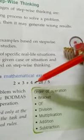For example, solving a mathematical expression: 2 into 3 plus 4 into 20 by 5. To solve this mathematical expression, we are using the order of operations - this is the BODMAS rule.